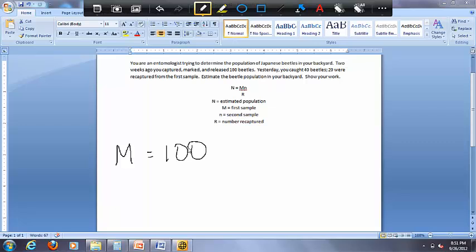The second sample is the little n. And it says yesterday you collected a total of 40 beetles. So that's our little n.